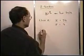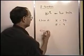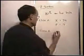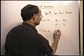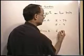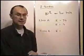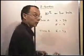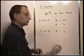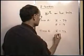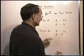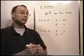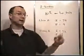Now let's look at the other class. In class B the average might be 72 — a little bit lower — and the deviation was 9, so the data is a little more spread out.